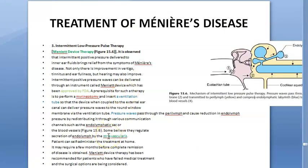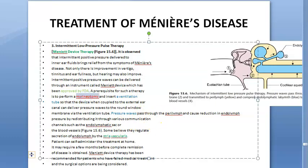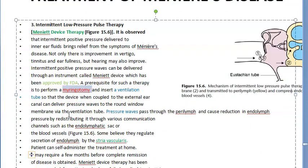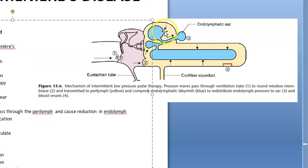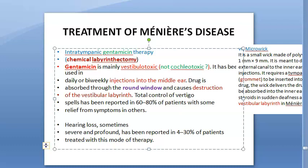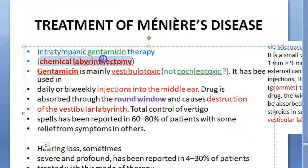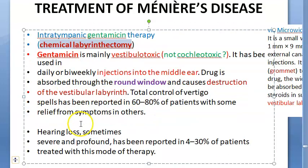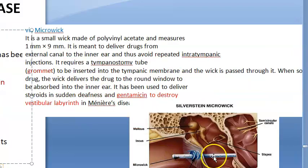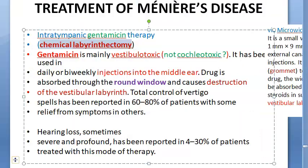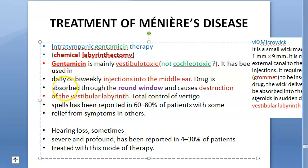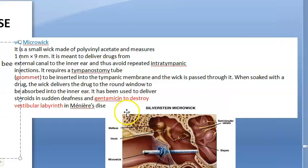For the intermediate procedures: myringotomy with ventilation tube for Meniett device low pressure pulse therapy — pressure travels via ventilation tube to round window, then to perilymph, squeezing endolymph into the endolymphatic sac for drainage. Then intratympanic gentamicin therapy — chemical labyrinthectomy — uses a micro wick via a tympanostomy grommet to deliver gentamicin through the round window, destroying the vestibular labyrinth. Gentamicin is vestibulotoxic.